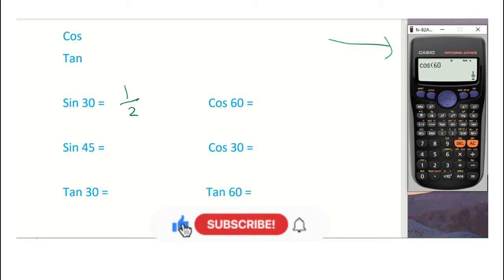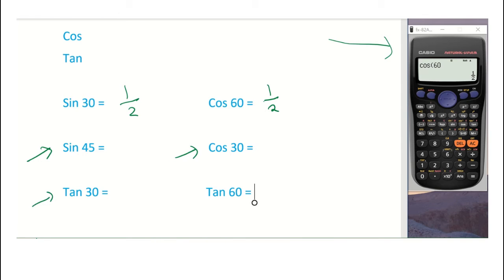Even tan 45 is also not a trouble, but these values - sin 45, cos 30, tan 30, tan 60 - if you want to get the exact value by using a calculator that's a bit of a trouble. So I'm going to show you the process properly and then you can follow that.